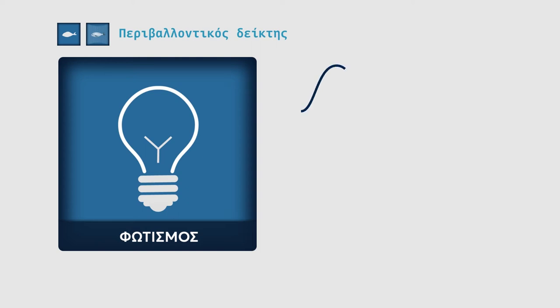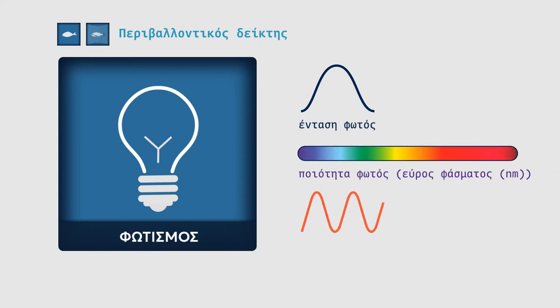In such cases, the lighting is a complex factor, described by the intensity, quality, spectrum, as well as its periodicity, photo period.